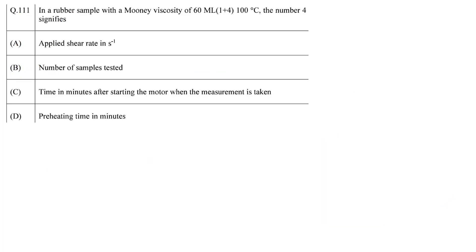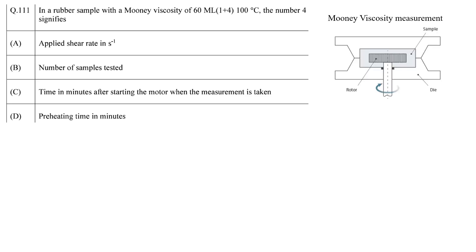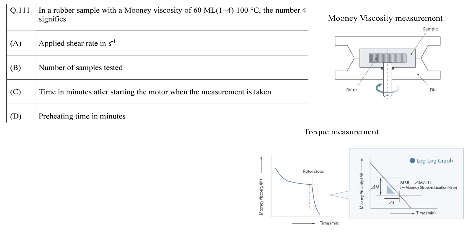The next question is: in Mooney viscosity measurement of a rubber sample, what does the number force signify? Mooney viscosity is used to measure the viscosity of both natural and synthetic rubber. The Mooney viscometer measures the torque required to rotate a disc filled with the uncured rubber.